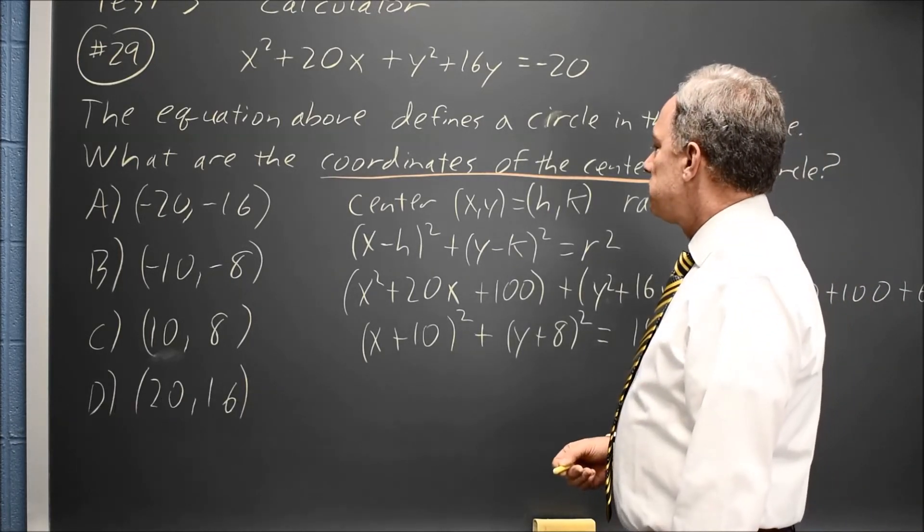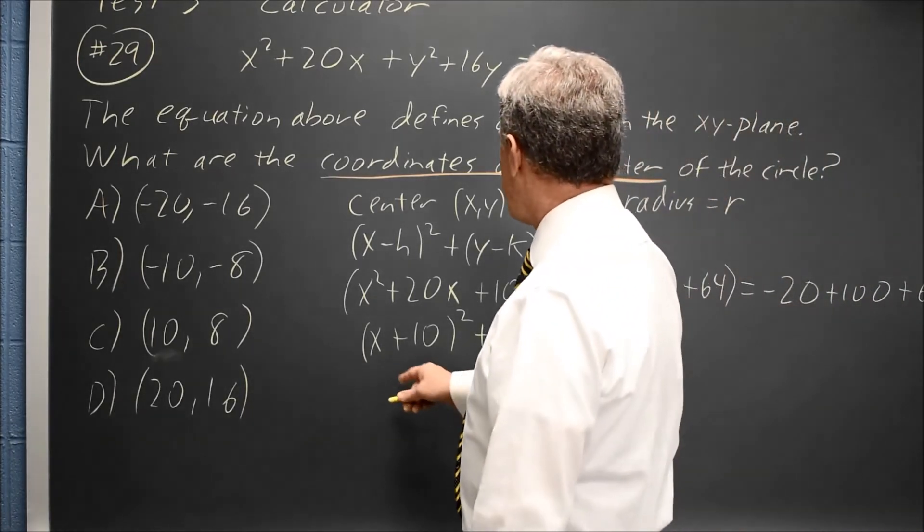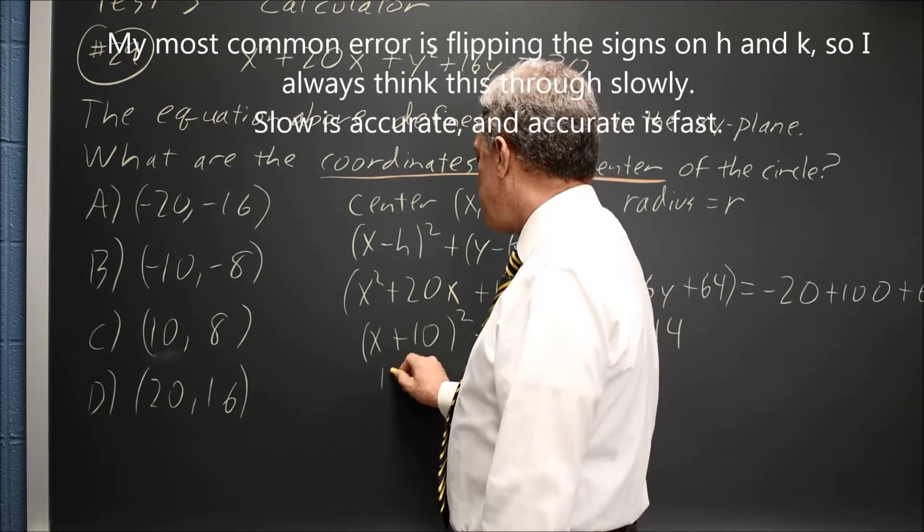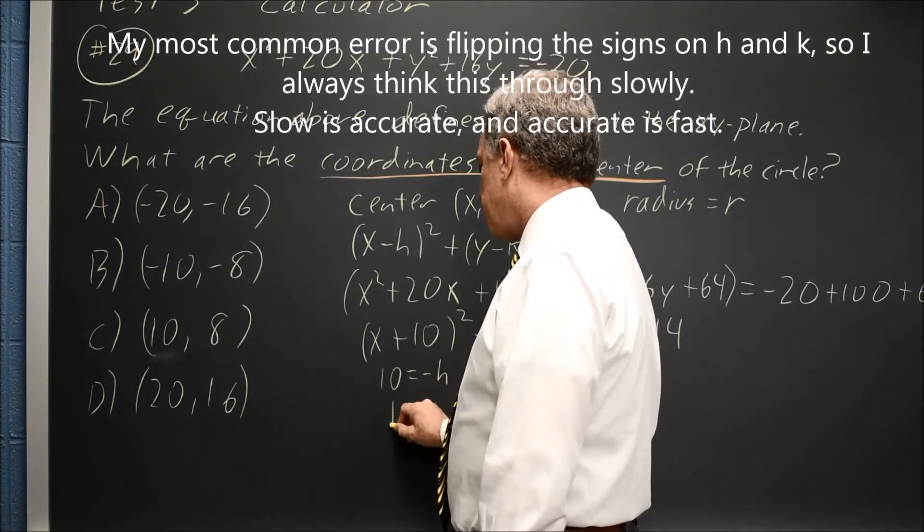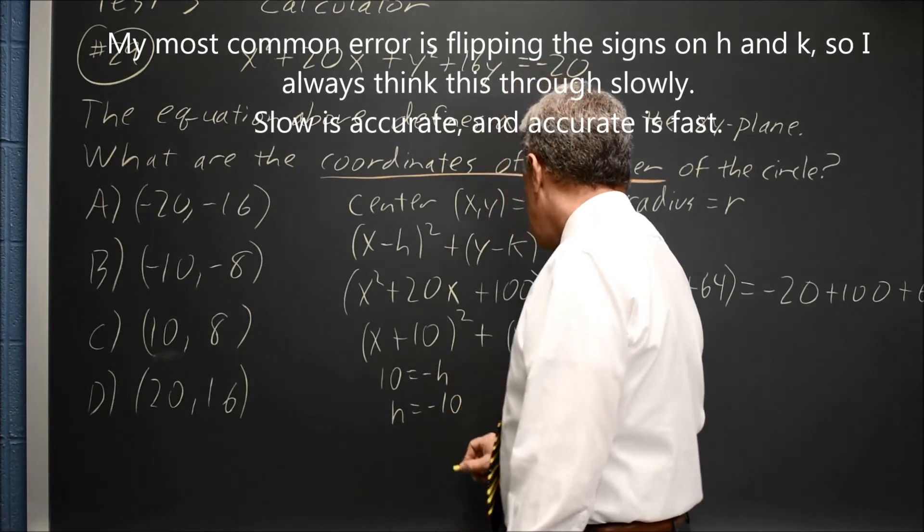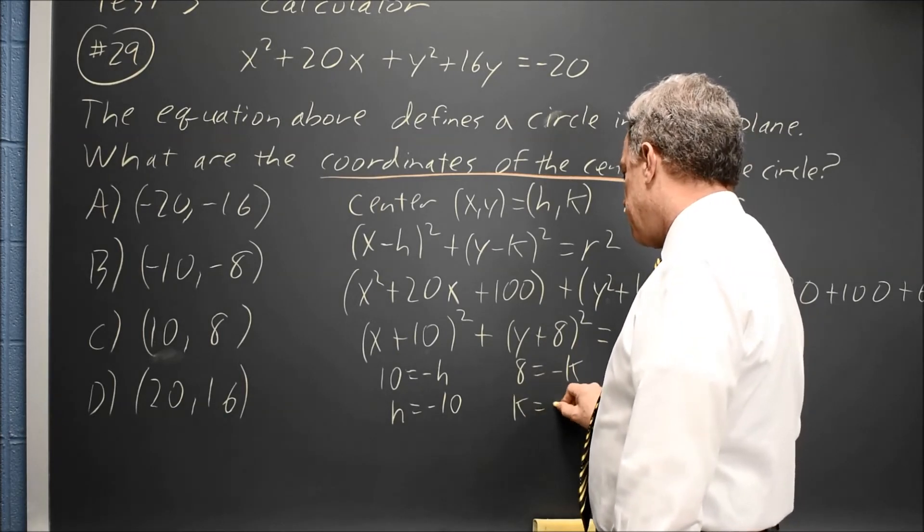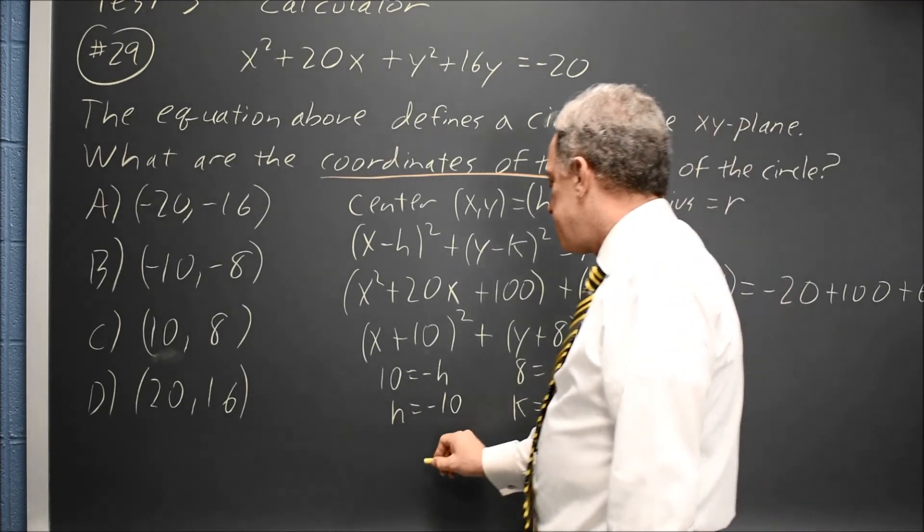So the center is (h,k), where x+10 is x-h. So 10 equals -h, or h equals -10. And similarly, 8 equals -k, or k equals -8.